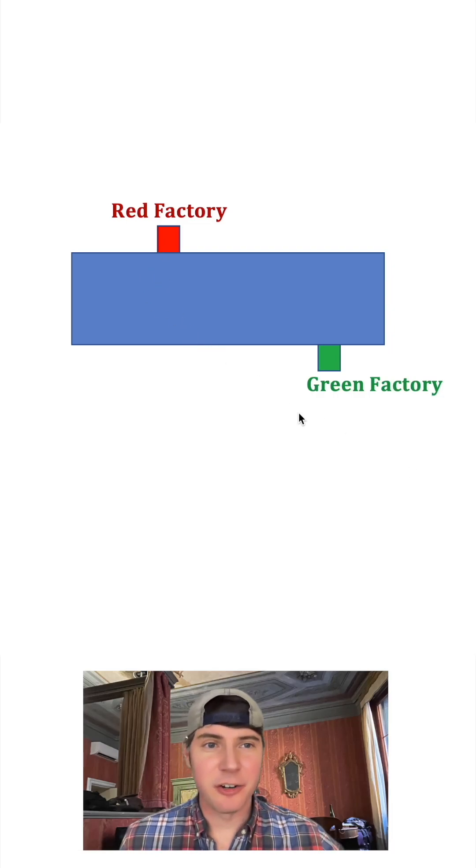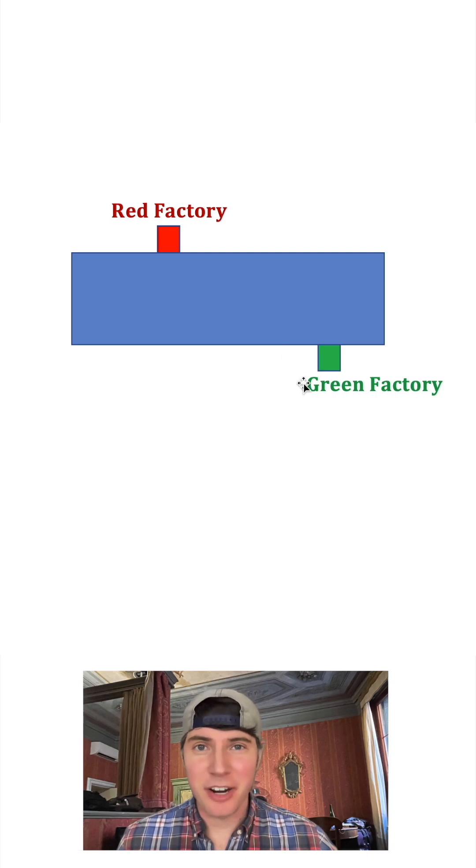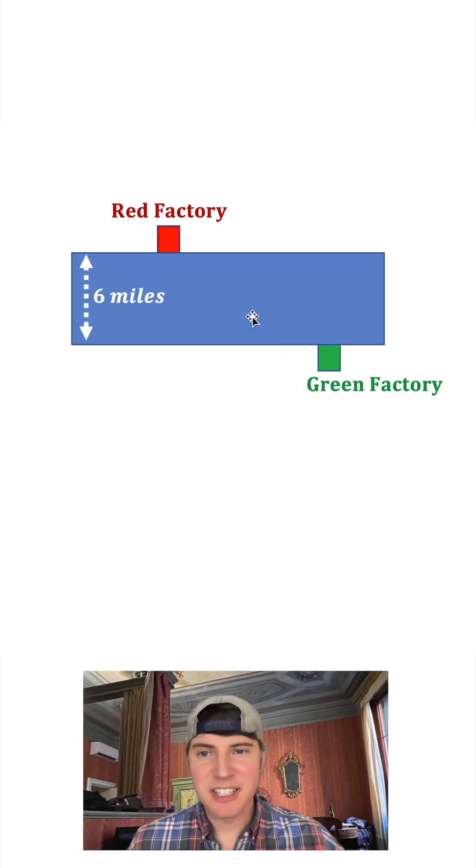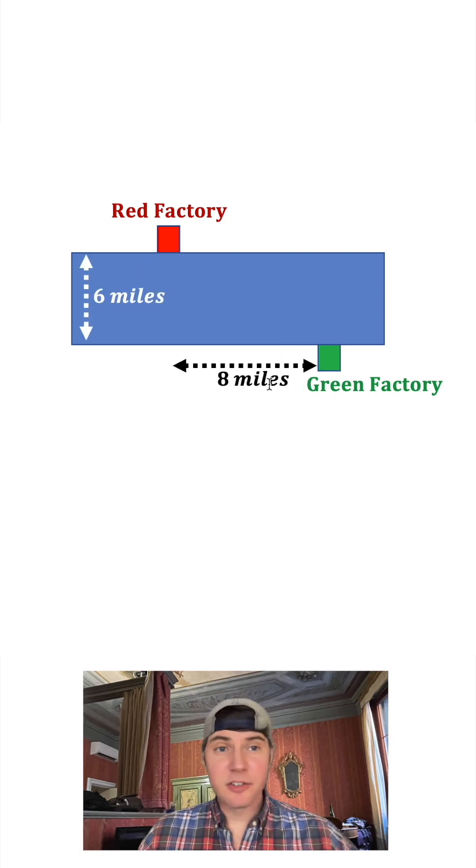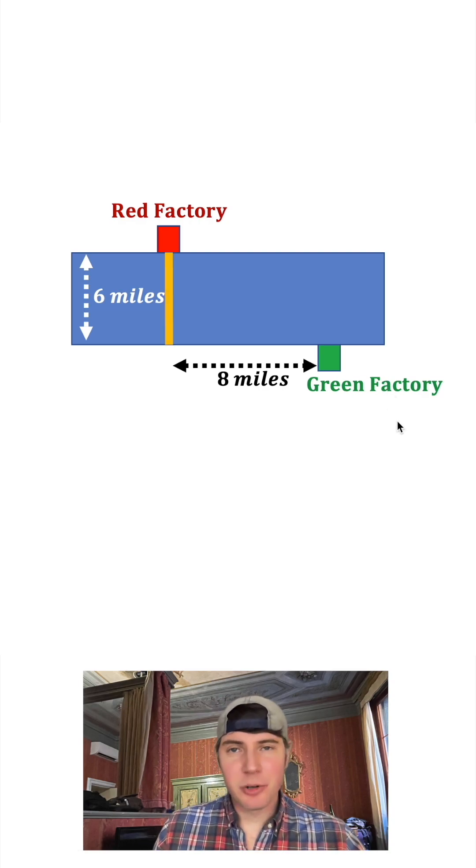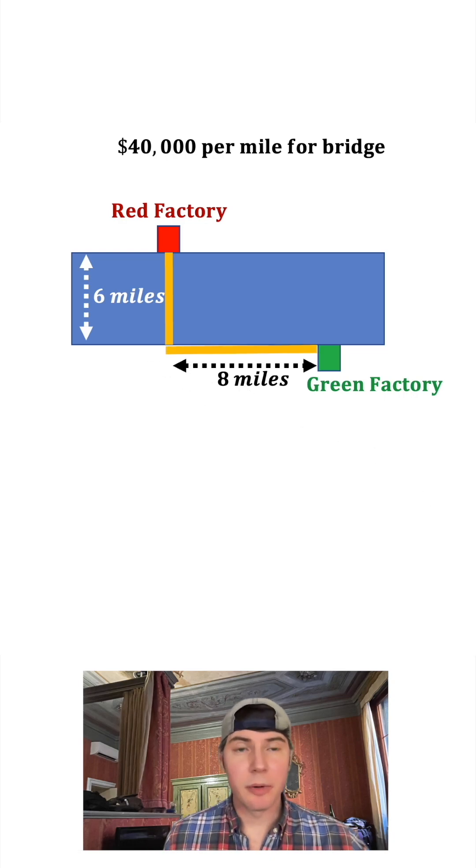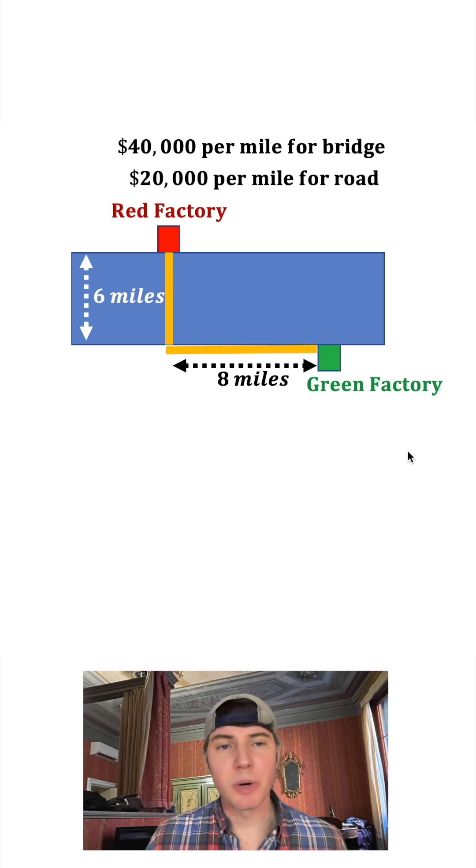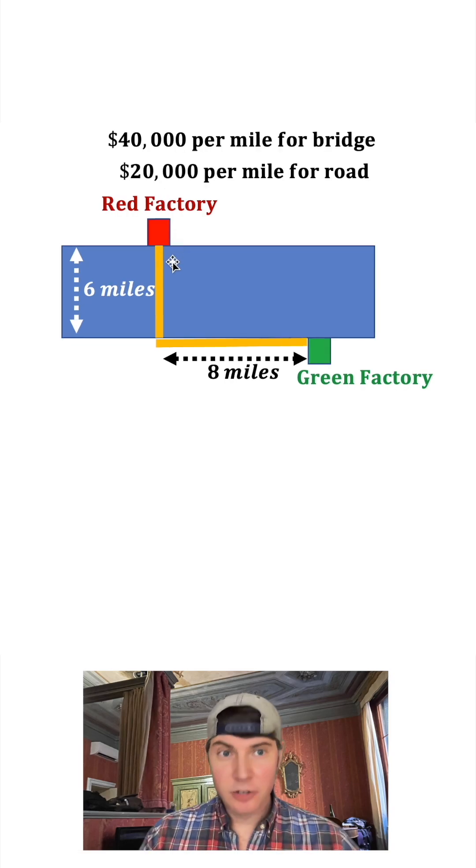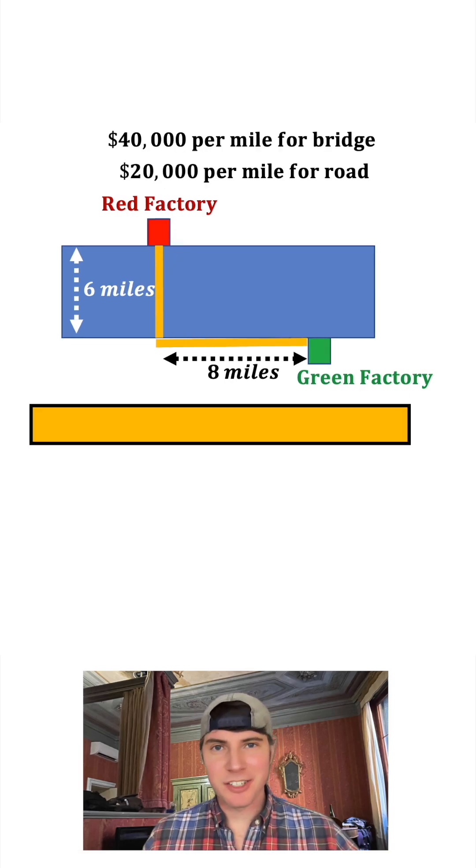Hey guys, I have a red factory over here and a green factory over here. I need to get stuff from my red factory to my green factory, but there's this body of water in the middle that's six miles across, and this distance is eight miles. I can make a bridge across the body of water that's going to cost me $40,000 per mile, and then build a road to the green factory that's going to cost $20,000 per mile.